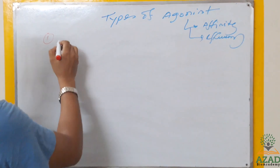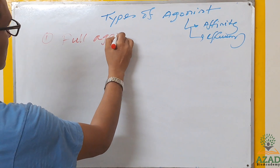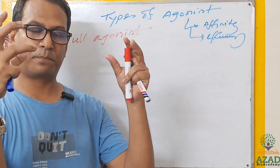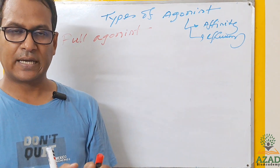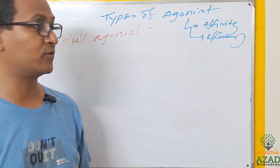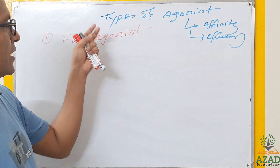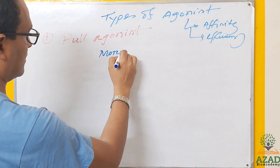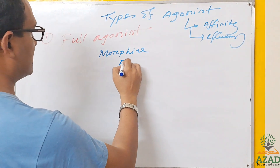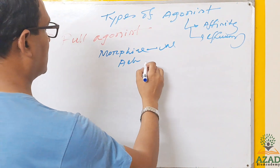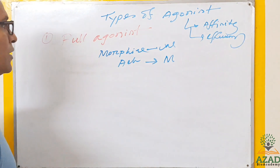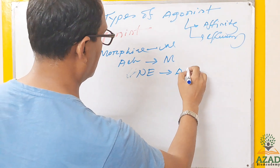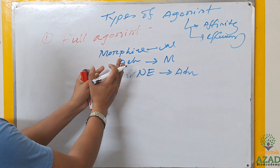The first type is full agonist. A full agonist means it will bind properly with the receptor — a perfect match with the binding site and stimulatory site — and it will give its maximum activity. Examples include morphine, which is related to the mu receptor; acetylcholine, which acts on muscarinic receptors; and norepinephrine or epinephrine, which act on adrenergic receptors.